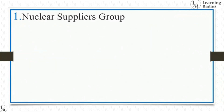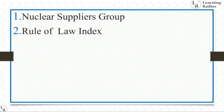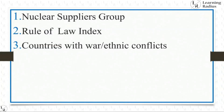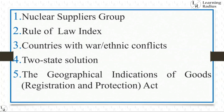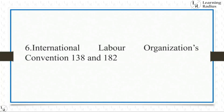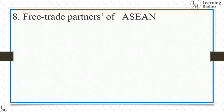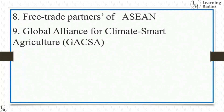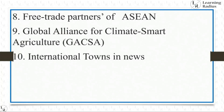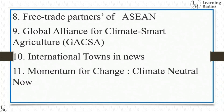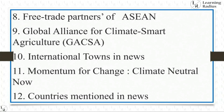The topics from which UPSC framed the questions were: Nuclear Suppliers Group, Rule of Law Index, countries with war or ethnic conflict, two-state solution, the Geographical Indication of Goods Registration and Protection Act, International Labour Organization Convention 138 and 182, additional protocol with the International Atomic Energy Agency, free trade partners of ASEAN, Global Alliance for Climate Smart Agriculture, international towns in news, Momentum for Change Climate Neutral Now, and countries mentioned in news.